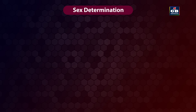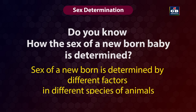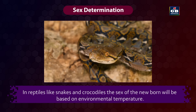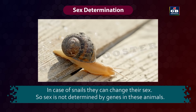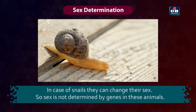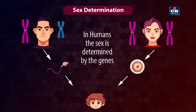How is the sex of a newborn baby determined? Sex is determined by different factors in different species. In reptiles like snakes and crocodiles, sex is based on environmental temperature; in snails, they can change their sex. But in humans, sex is genetically determined — the genes inherited from the parents decide the sex of the newborn baby.